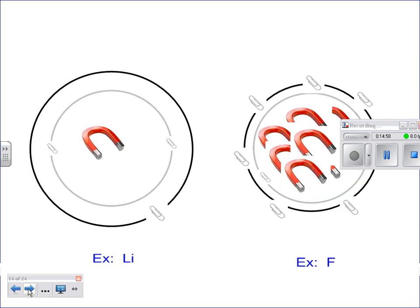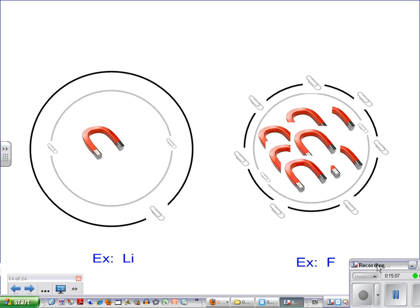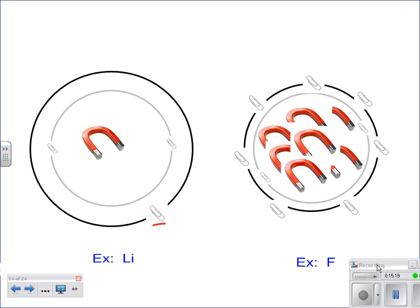So they pull electrons in tighter as protons increase. Within the same period, if you have lithium at one end and fluorine at the other, lithium has one valence electron pretty far out. But fluorine has the same number of energy levels yet a whole bunch of big massive protons that more effectively pull that ring of electrons in tighter.